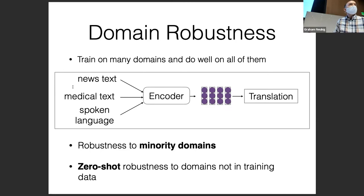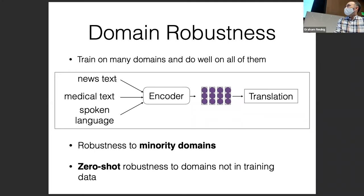Domain robustness links back to the question about having multiple domains in one dataset. You might want robustness to minority domains — for example, having 100 million sentences of news and 100 thousand sentences of medical, and wanting both to be handled well. You can also have zero-shot robustness to domains not in the training data — like having 100 million sentences of news text and no medical text, but still wanting to do well at translating medical text.